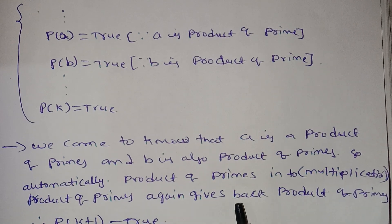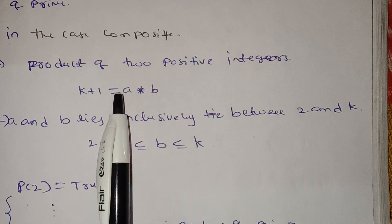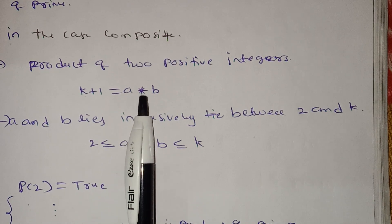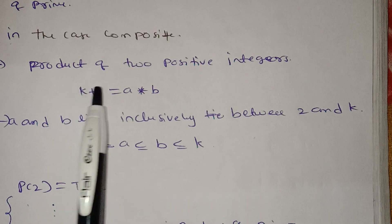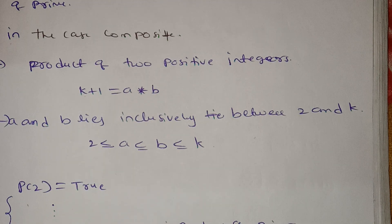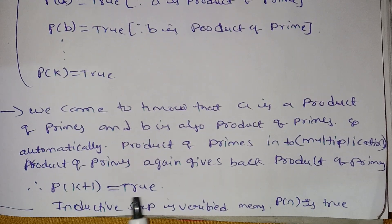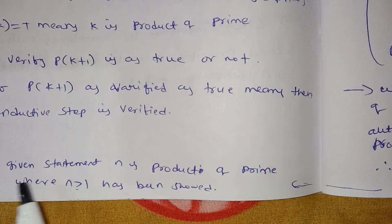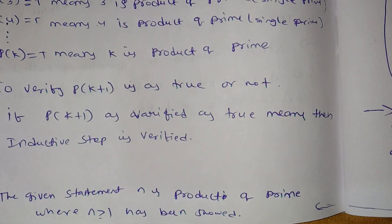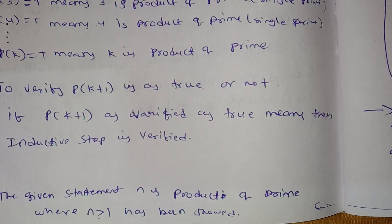Since a is a product of primes and b is also a product of primes, their product a × b is also a product of primes. Therefore p(k+1) is true. The inductive step is verified, so p(n) is true — that is, n is a product of primes for all n greater than 1.